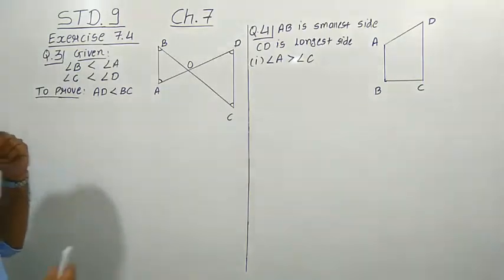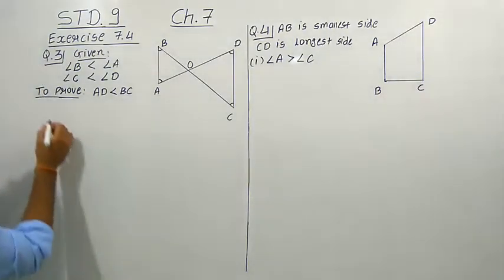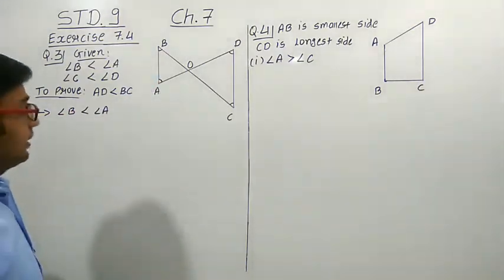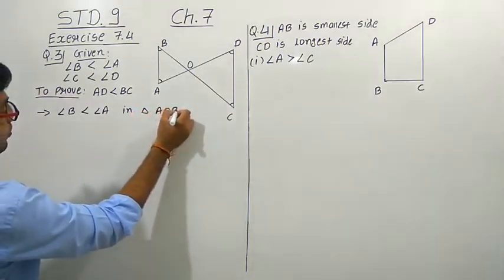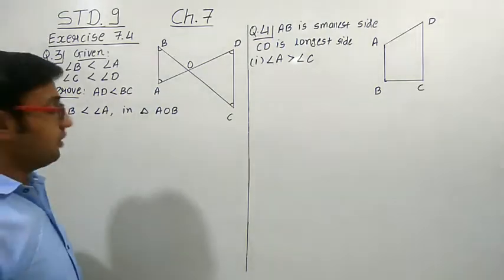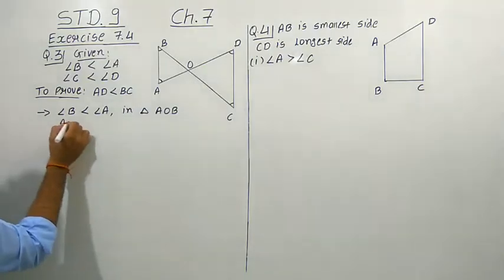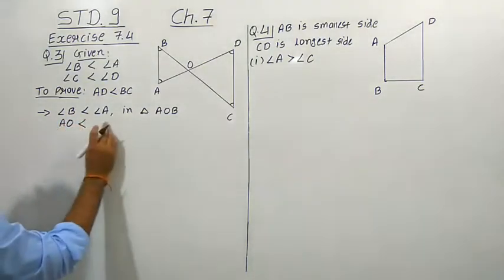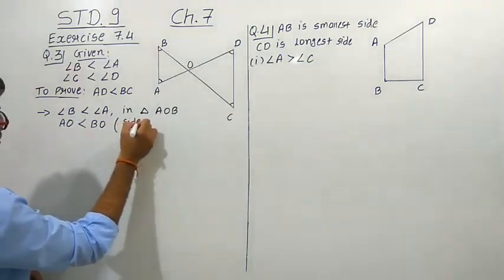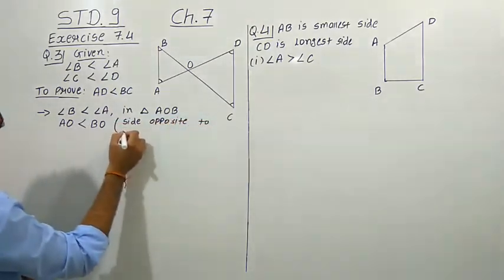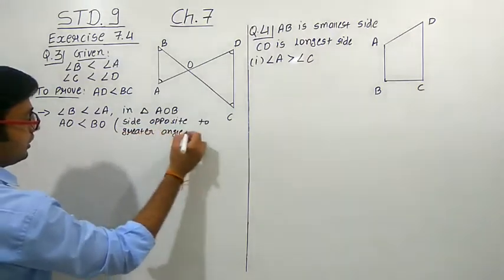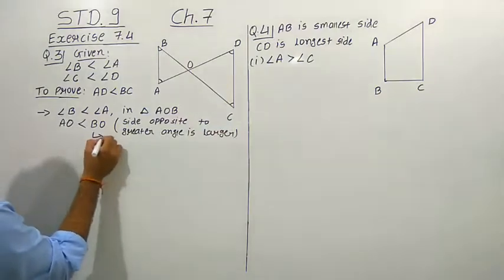We have to start from the given conditions. First, in triangle AOB, we have given that angle B is less than angle A. We know that the side opposite to the larger angle is longer. So the side opposite to angle B is AO, and the side opposite to angle A is BO. Therefore AO is less than BO. Give it inequality number 1. Reason: side opposite to greater angle is larger.